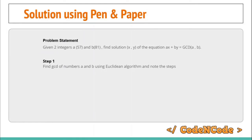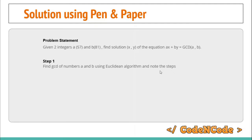The example problem is: given two integers a = 57 and b = 81, find the integer solution (x, y) such that ax + by = gcd(a, b). The first step is to find the GCD of a and b using the plain Euclidean algorithm and note down all of the steps.